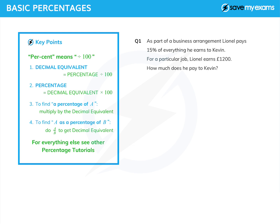You'll often be asked to find a percentage of something, and the easiest way to do that is to multiply by the decimal equivalent. If you're ever asked to find A as a percentage of B, I would just do A over B, which gives you the decimal equivalent, and then you can turn that into a percentage — or a percentage increase or decrease, or whatever the question requires. There are other tutorials on percentage increases, decreases, and reverse percentages, so let's just have a look at some hopefully very straightforward questions.